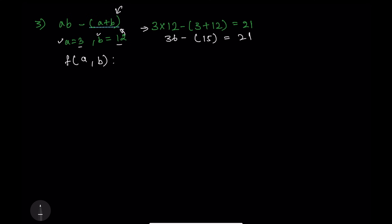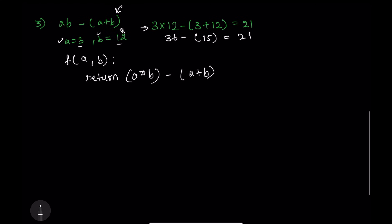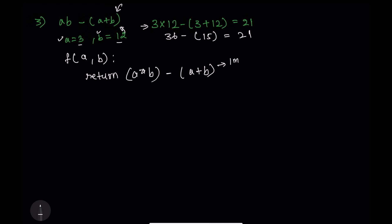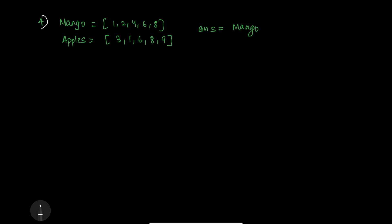In pseudo code: function receives a and b, then just return a * b − (a + b). That gives the direct result. Whether you're writing C++, Python, or Java, the code is only about two lines. This question should take about one minute to solve.